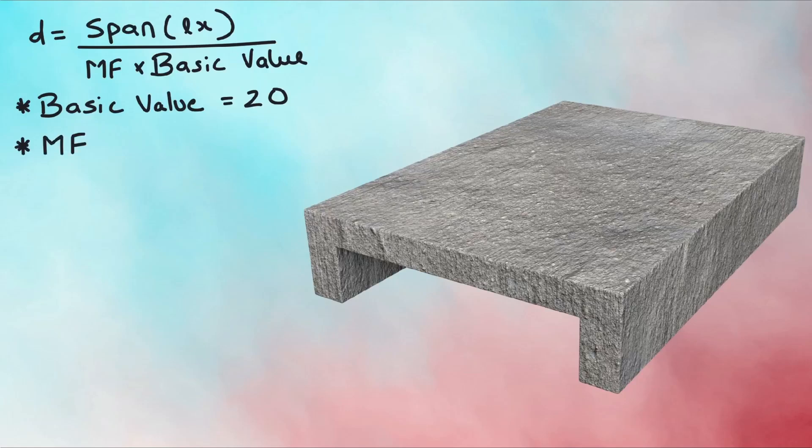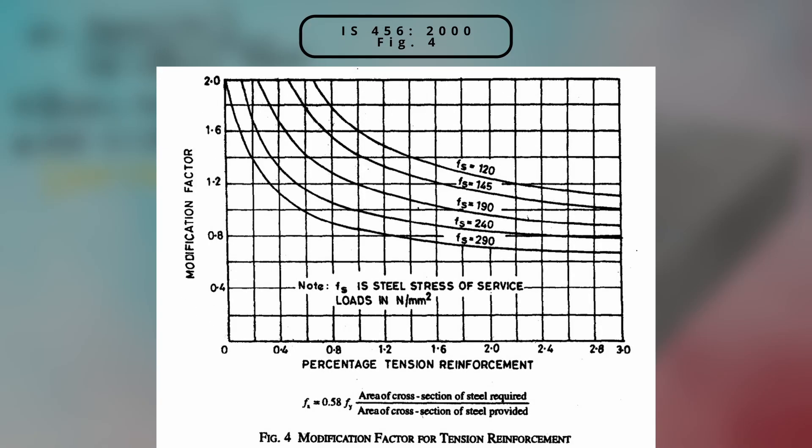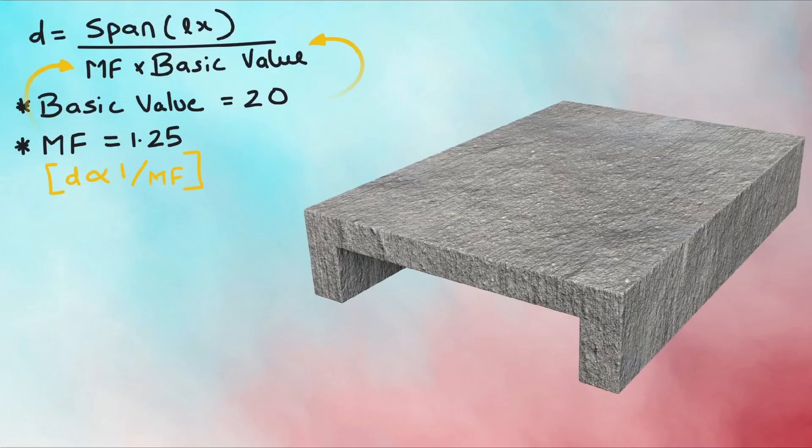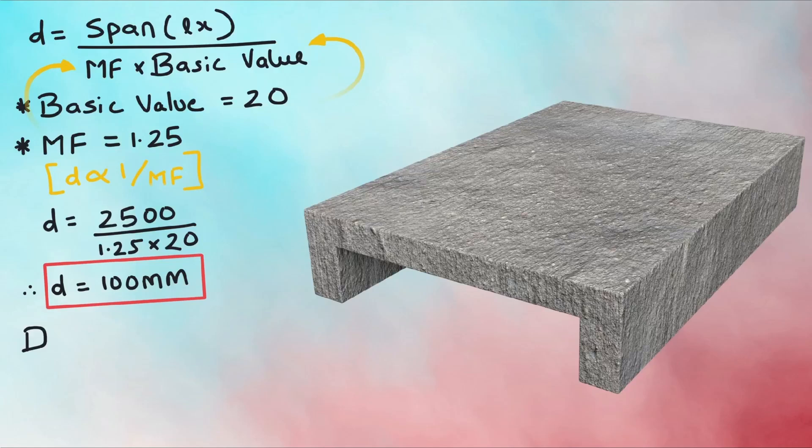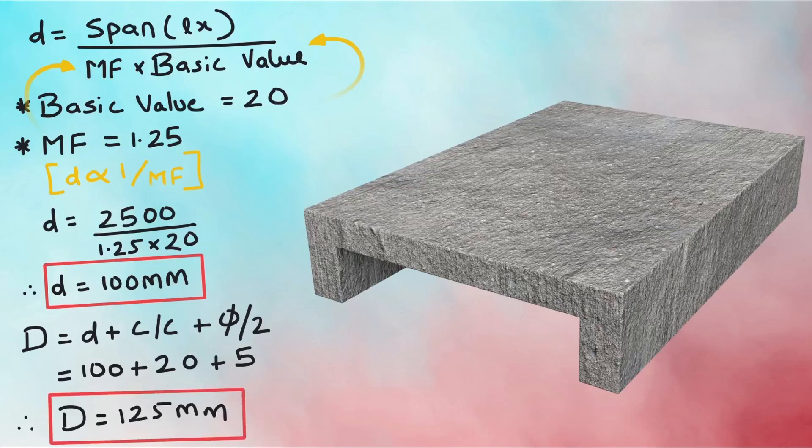MF is the modification factor, which is a multiplier for basic value and is inversely proportional to the required depth of the slab. Higher modification factor means less depth required and vice versa. Presently, we can take the value of 1.25, but later we will calculate modification factor as per figure 4 of IS 456-2000. Substituting these values in the equation: D equals 2500 divided by 1.25 into 20, hence calculating effective depth equals 100 mm. Now the total depth D is the effective depth plus clear cover plus half the diameter of bar. Assuming 10 mm bar, the equation becomes 100 plus 20 mm clear cover plus 5 mm, which equals 125 mm. So our effective depth is 100 mm and total depth is 125 mm.